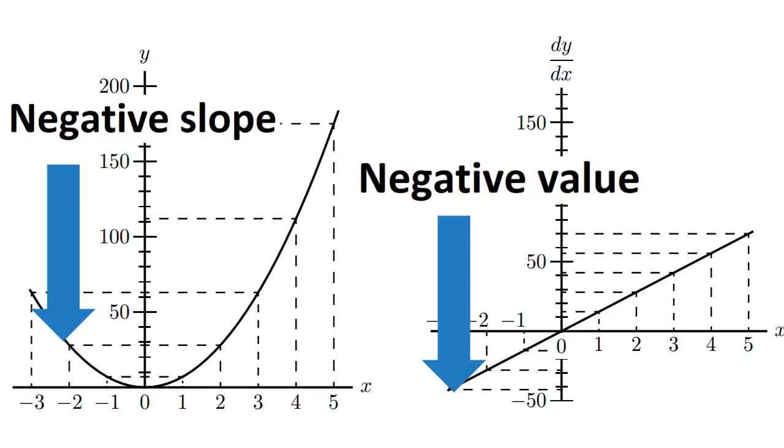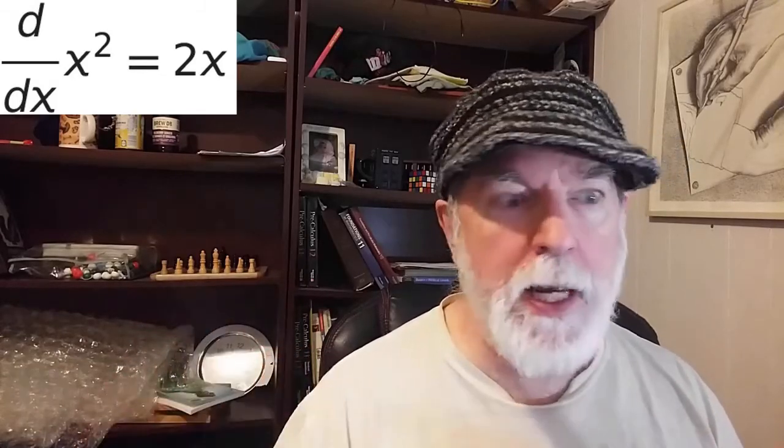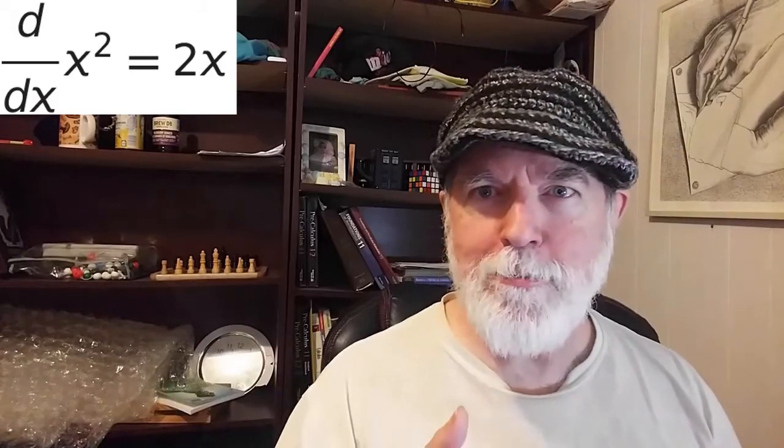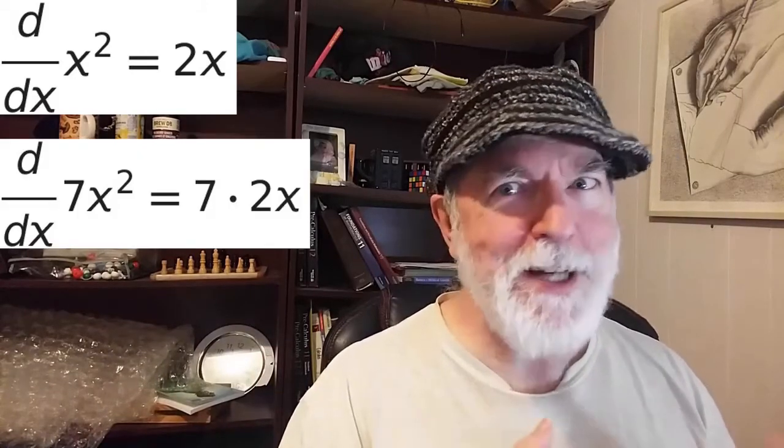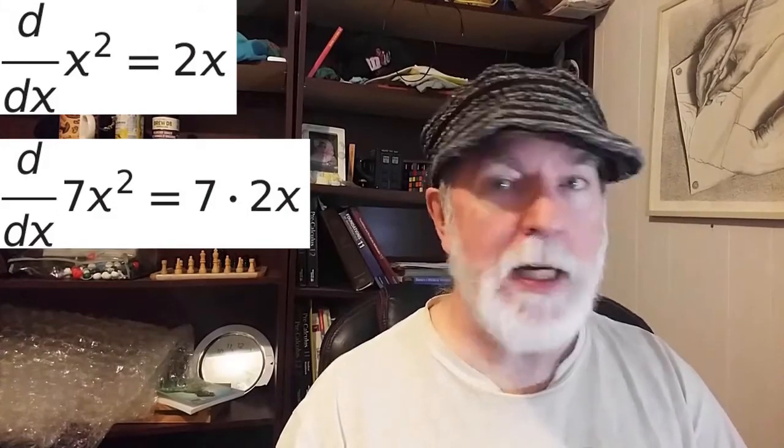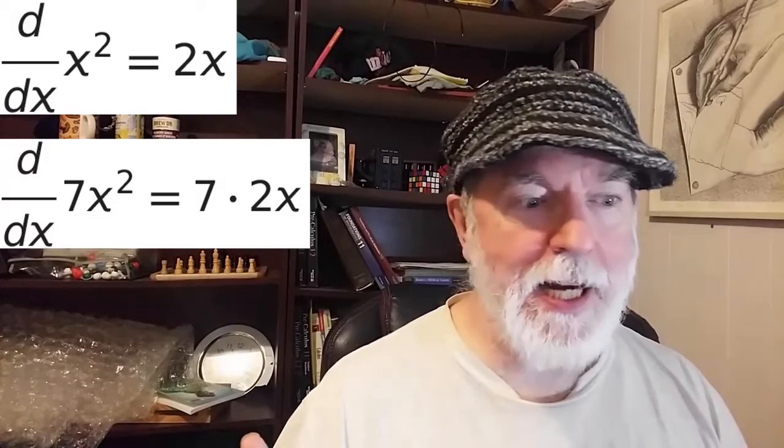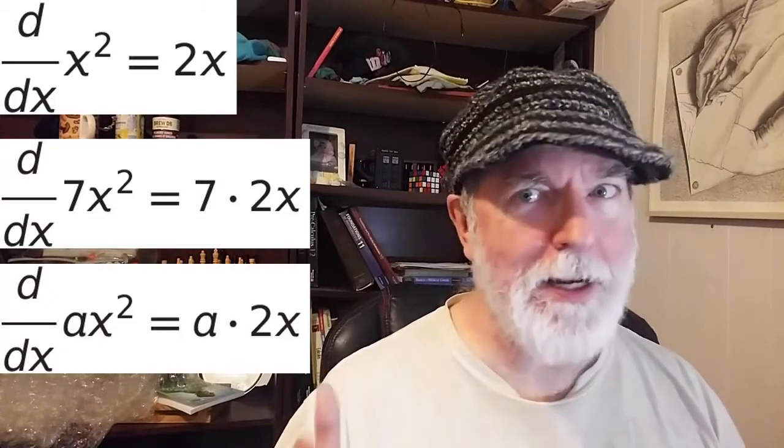If we had just differentiated x squared using our power rule, we'd get 2x. So our new derivative is 7 times that. And if we had started out with 8x squared, it would be 8 times that derivative. And if we had ax squared, it would be a times that derivative.